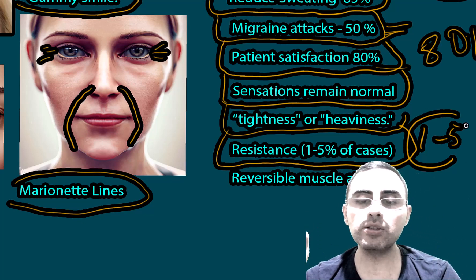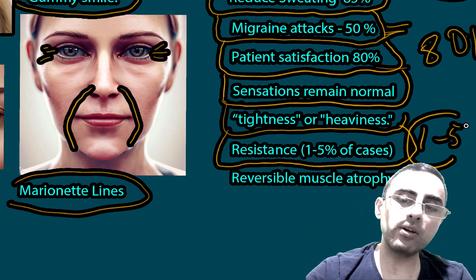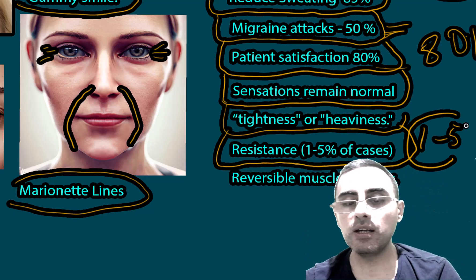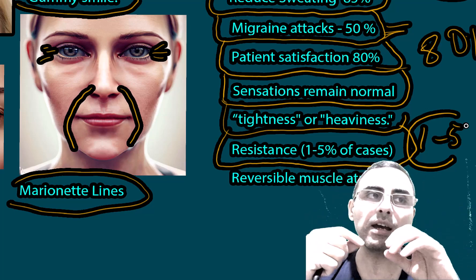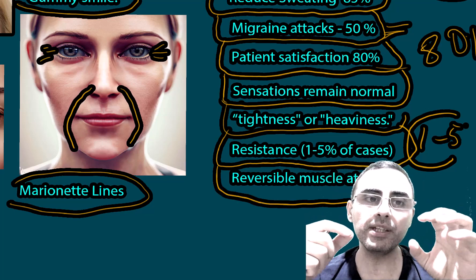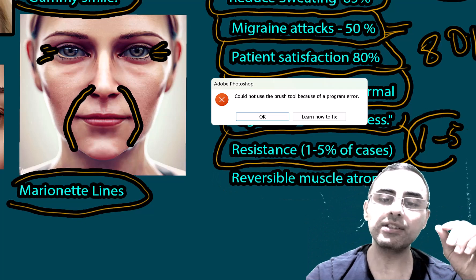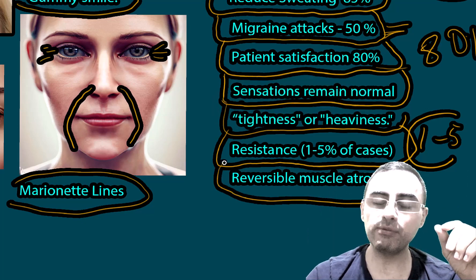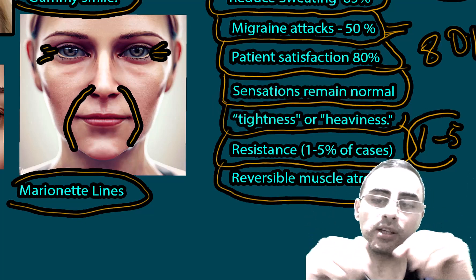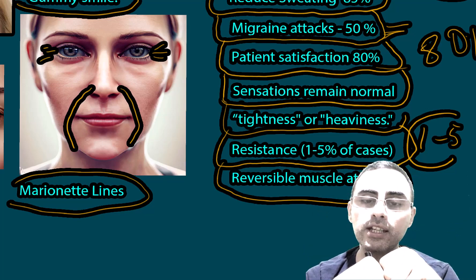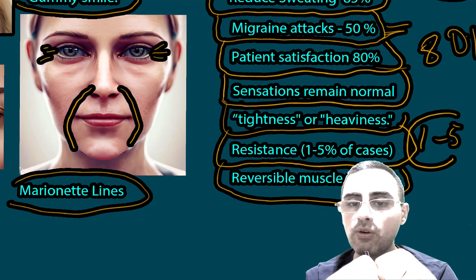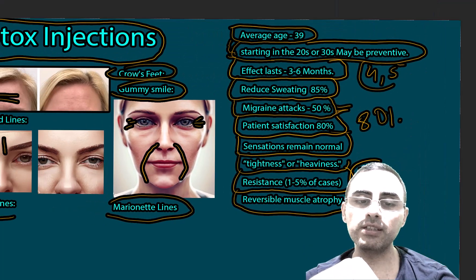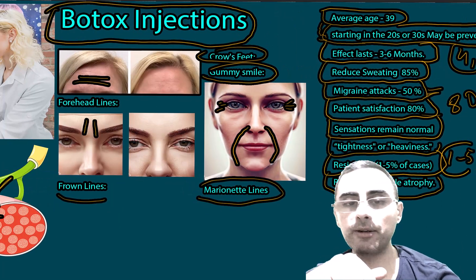Botox can also cause reversible muscle atrophy — shrinking of muscles — but this is usually reversible, and when the person stops Botox injections, the muscle atrophy will disappear.